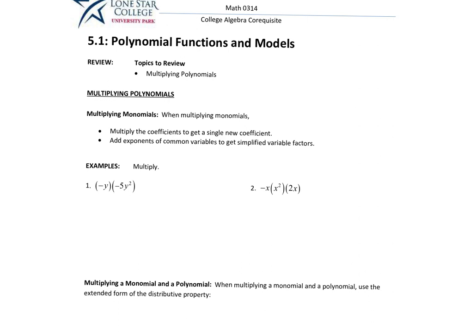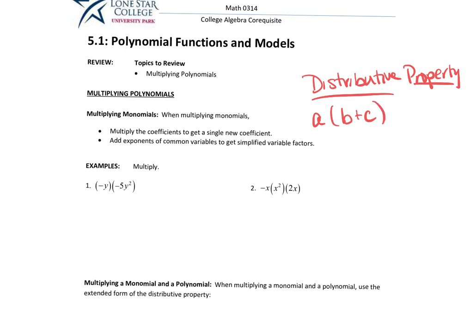When you multiply monomials, you multiply the coefficients to get a single new coefficient, and then you always add the exponents. When you multiply, you're really using the distributive property. The distributive property says we multiply two things: a times (b plus c). Each term inside the grouping symbols — the parentheses — has to get multiplied by that term. So you get a times b plus a times c.